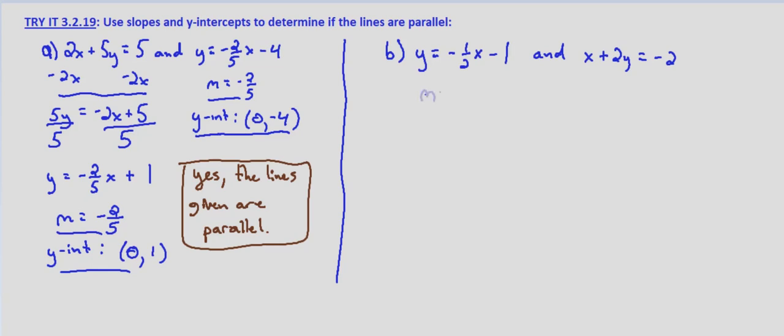Our slope equals negative 1 half, and our y-intercept is 0, b, which in this case is 0, negative 1.